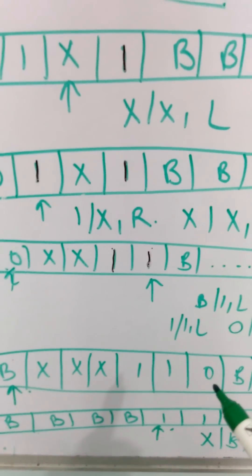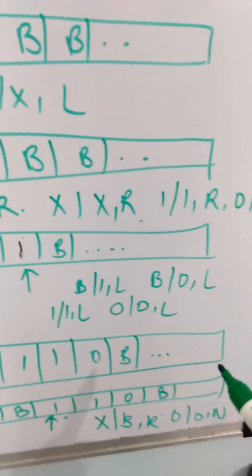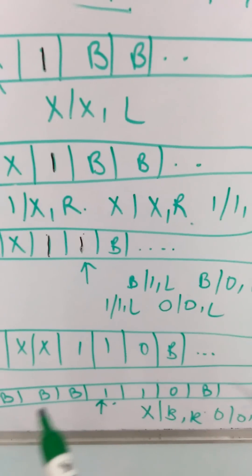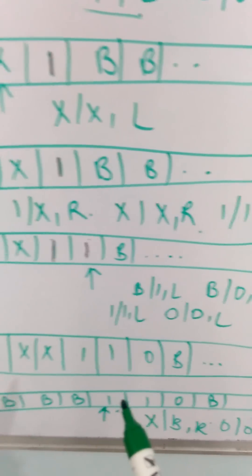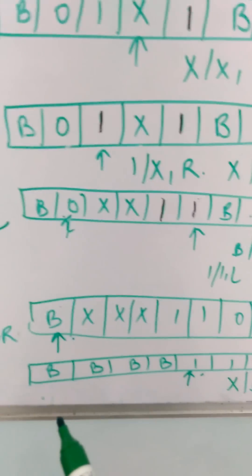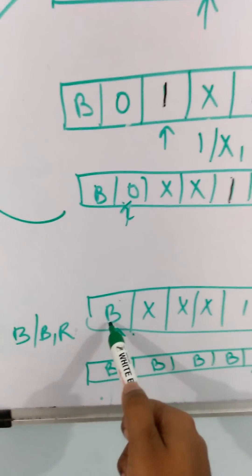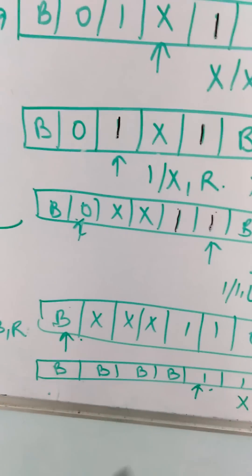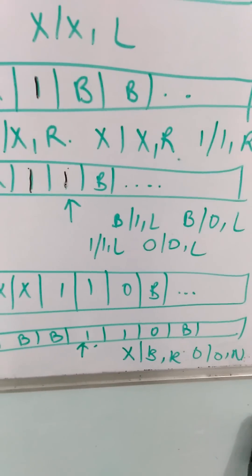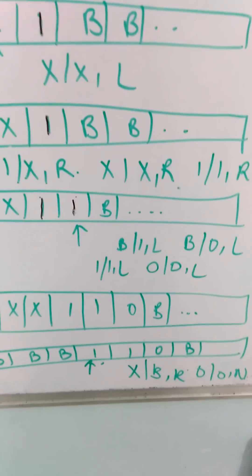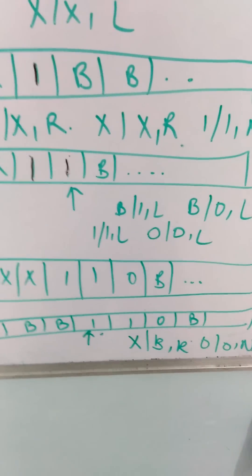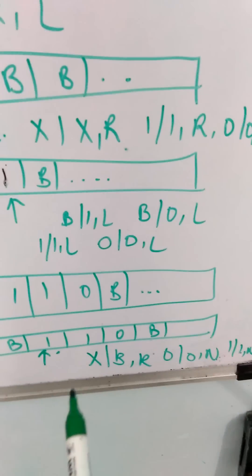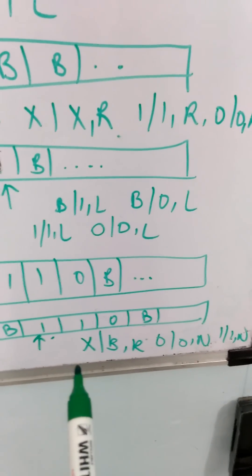Then we will replace this first character with x and move to the blank space. After doing this, we will move the head to the leftmost point. The leftmost point is this blank space. After this we will replace x with the blank space and move the head towards right. As soon as it reaches a character, we will hold there.